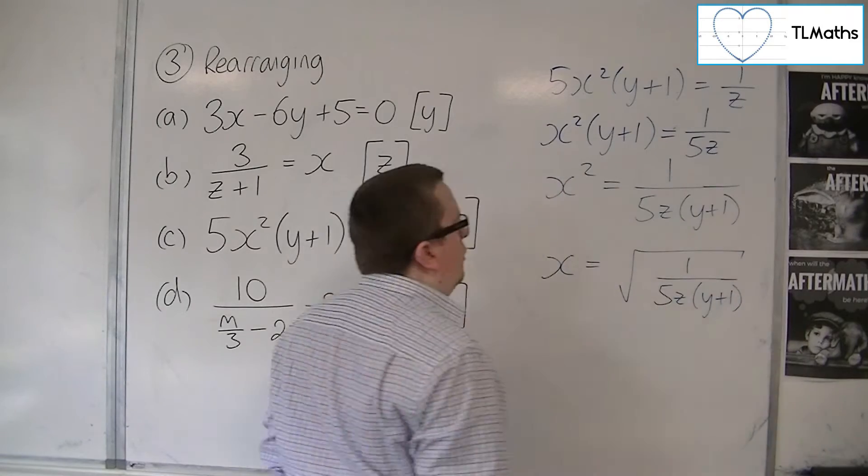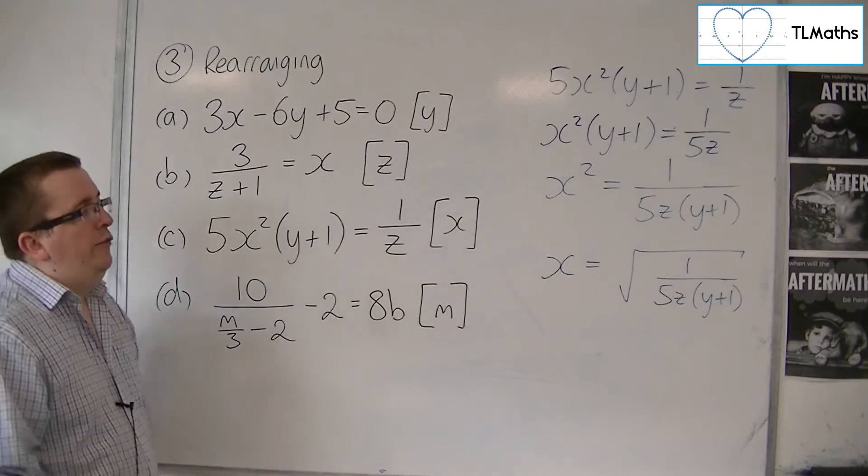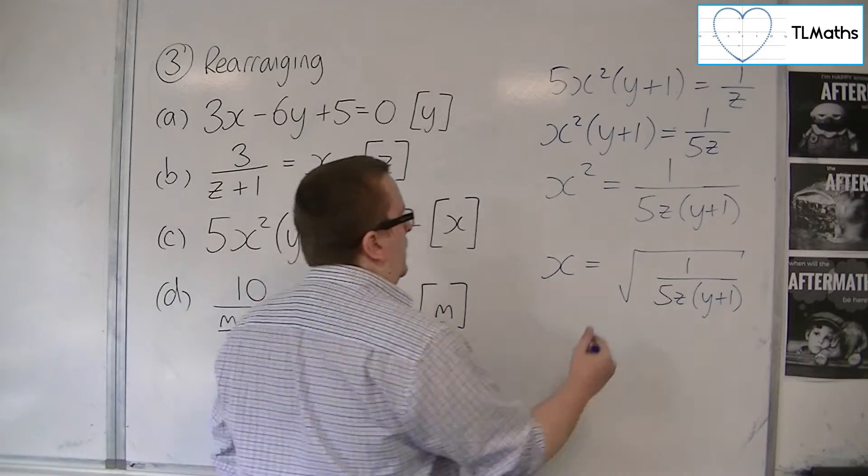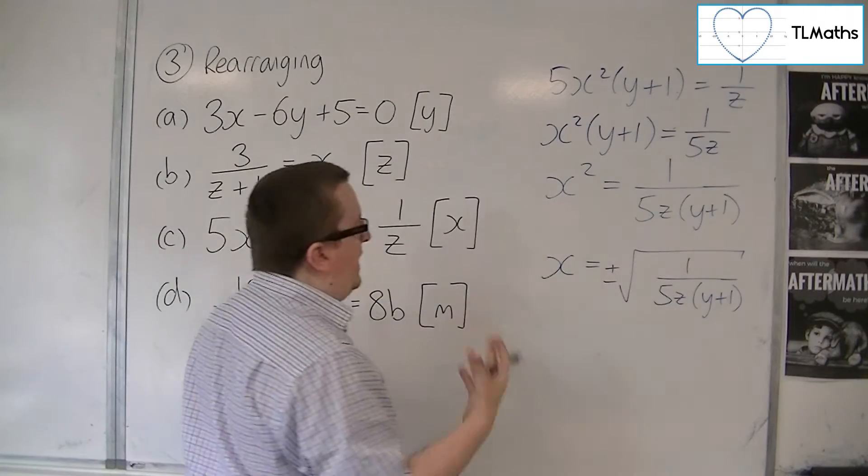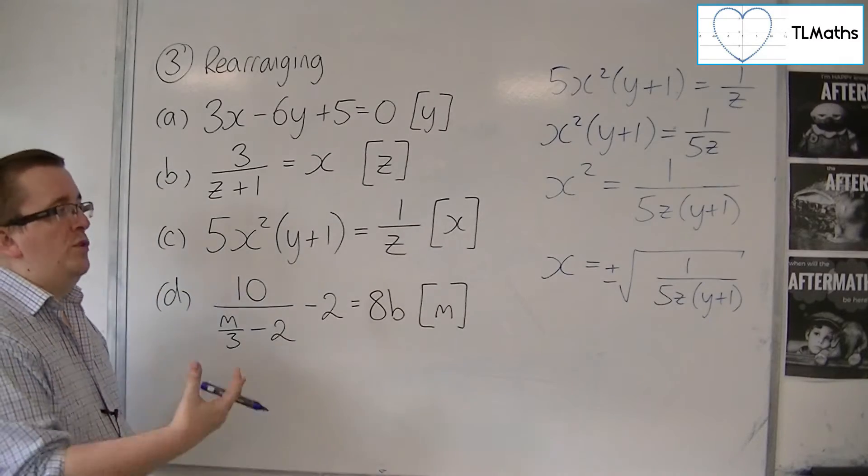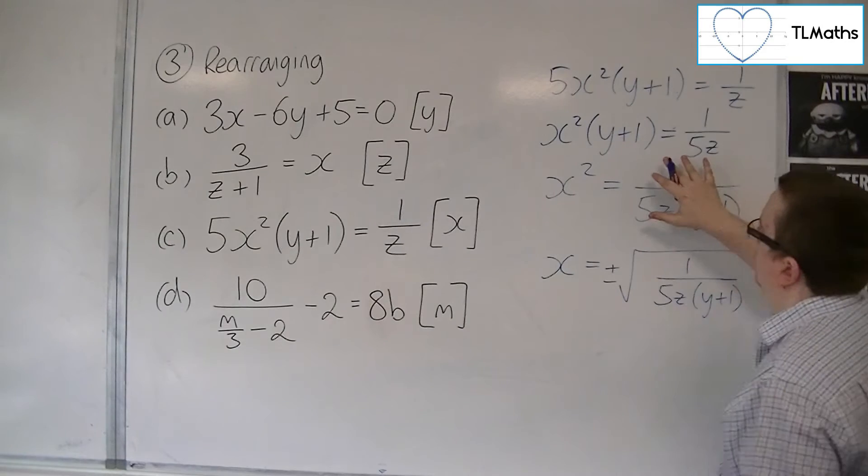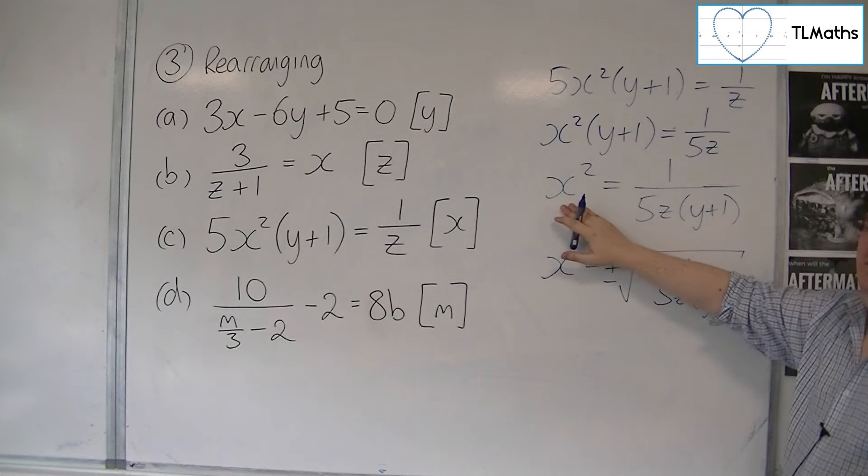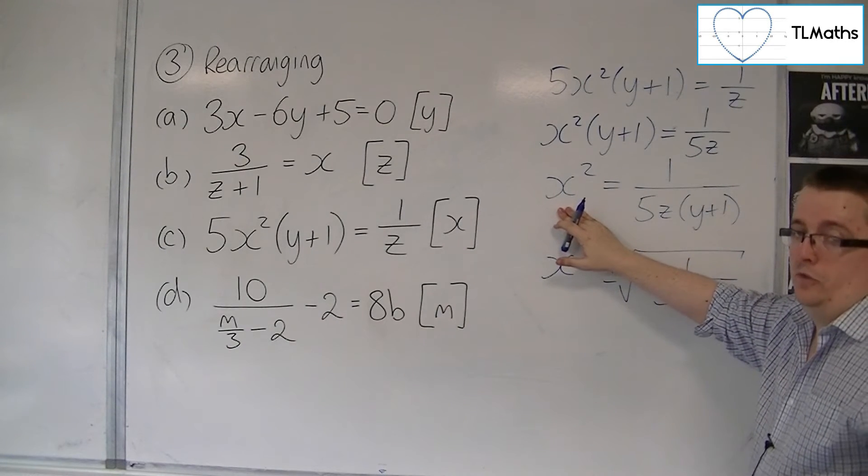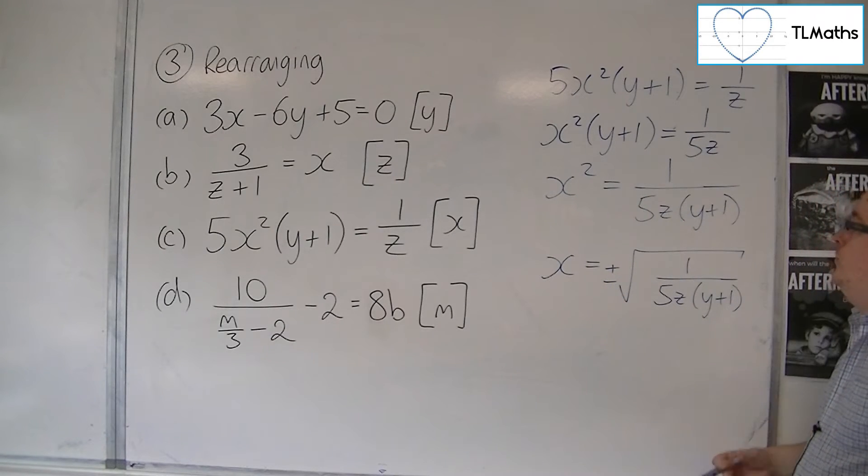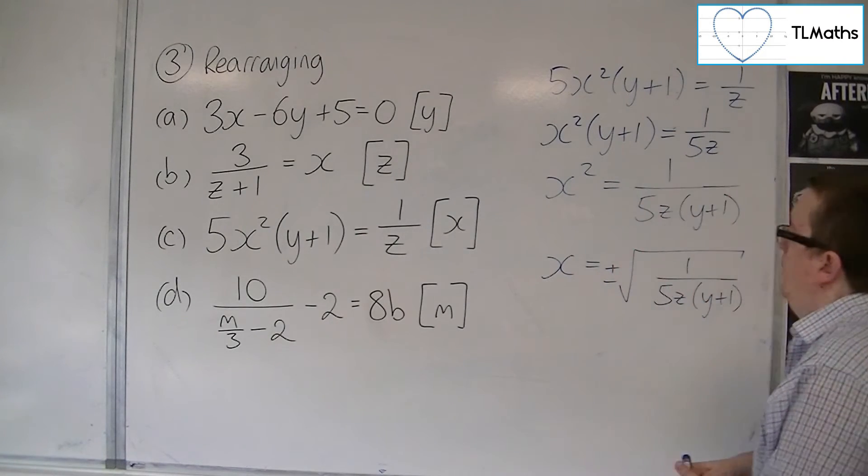But we're not quite done because when you square root like this, it brings about a plus minus. Because it could potentially have been positive or negative. So if this number was 9, for example, then X could be either 3 or minus 3. So that is why you have both the positive and the negative options there. So that's how we would do C.